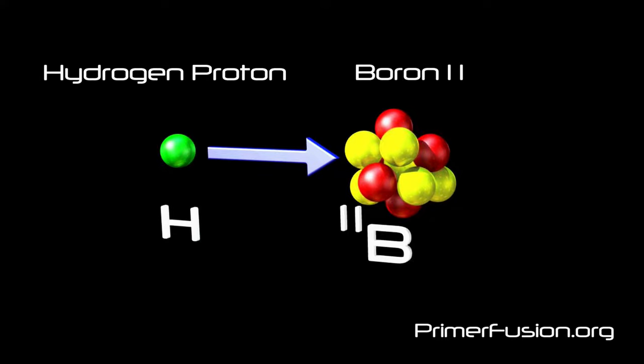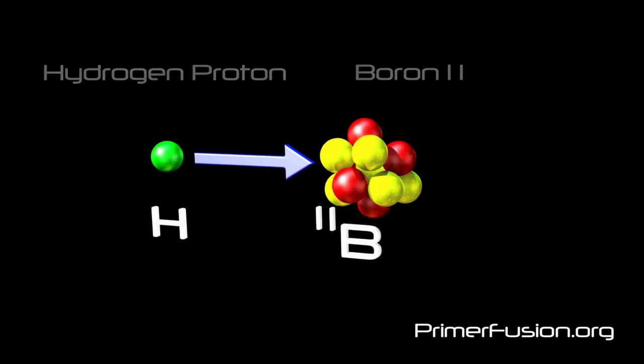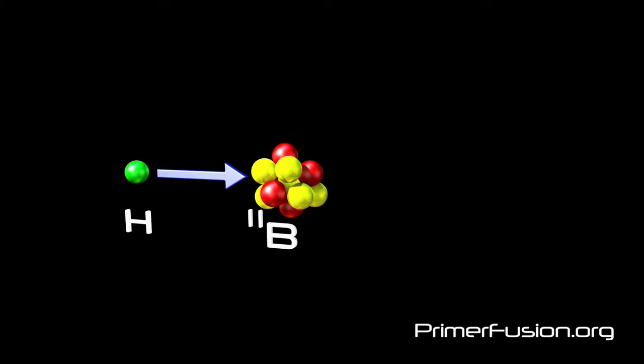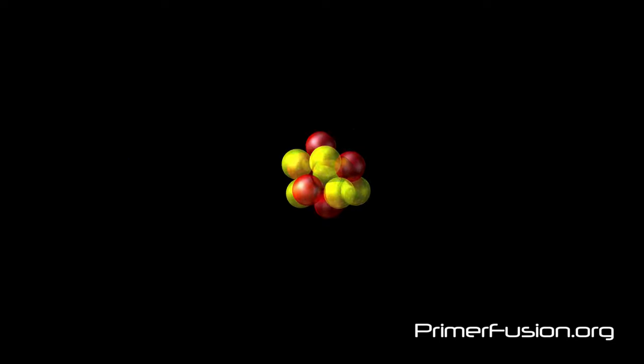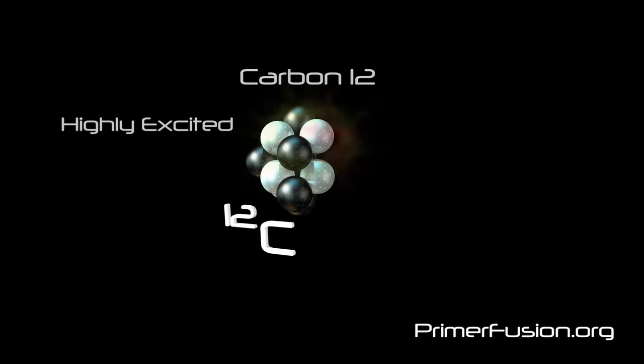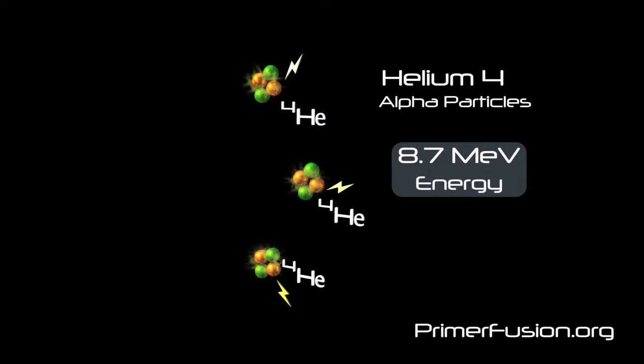Here we see a representation of a hydrogen proton and a nucleus of boron 11. When the hydrogen proton and the boron 11 nucleus fuse, they form a highly excited and very unstable nucleus of carbon-12 that almost instantaneously splits into three highly charged helium-4 alpha particles that fly off at high velocities.